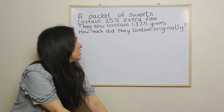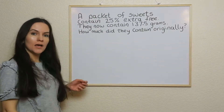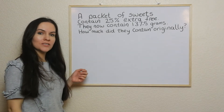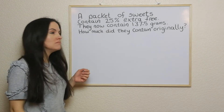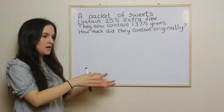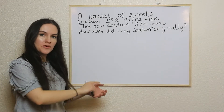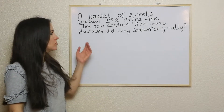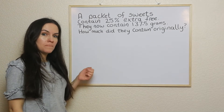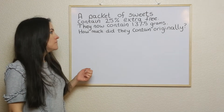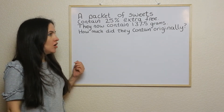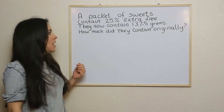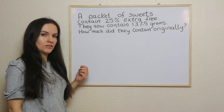So what we have here is an example: a packet of sweets contains 25% extra free. You've probably seen that when you buy a packet, it'll say on the side a percentage extra free. So these sweets are 25% extra free and they now contain 137.5 grams. How much did they contain originally?